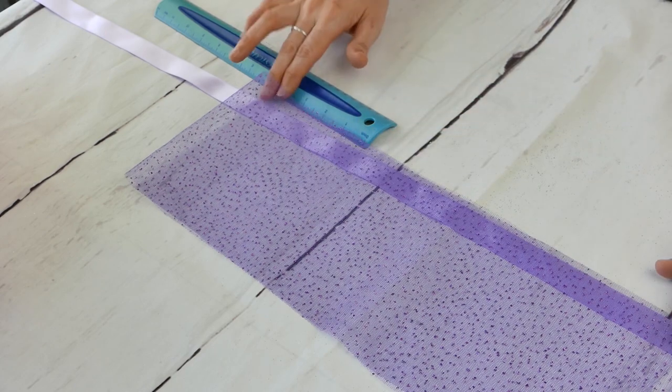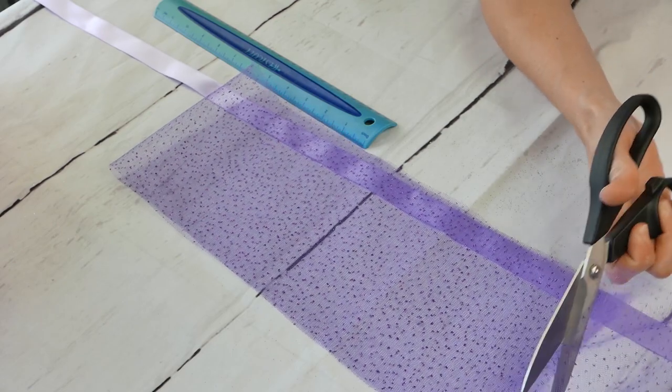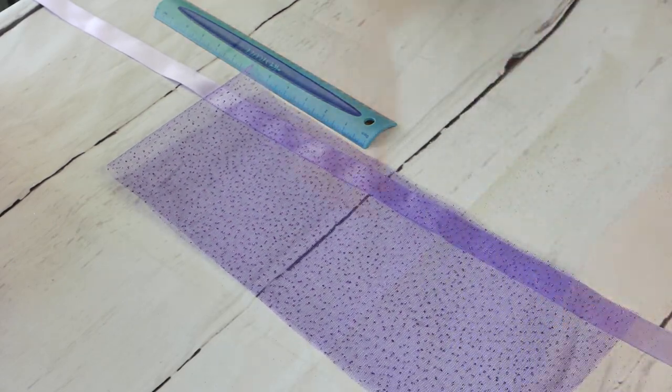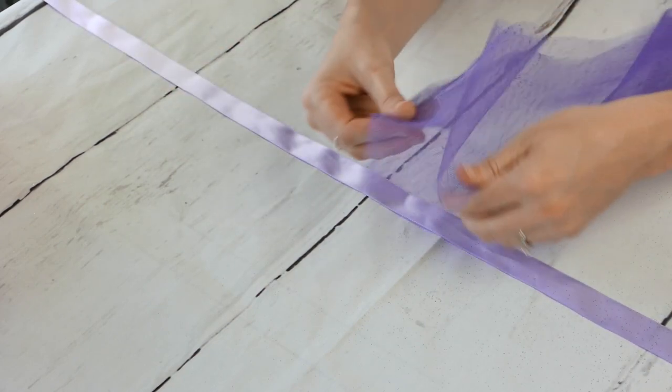Now we're going to be measuring our tulle. Each of the tulle ribbons are going to be 32 inches and then we're going to double it and fold it in half. So these are our glitter tulle fabric rolls that we're using. We're using them in several different colors. Don't worry, everything's in the description below.